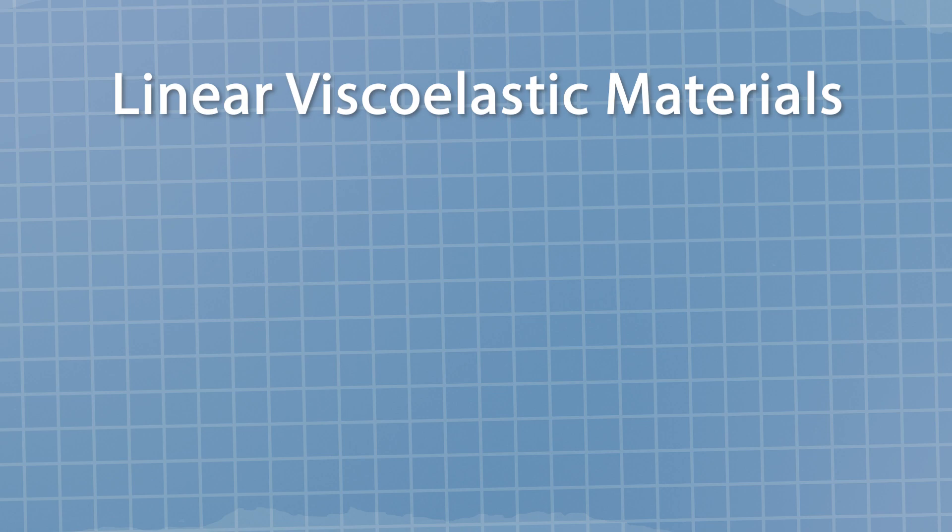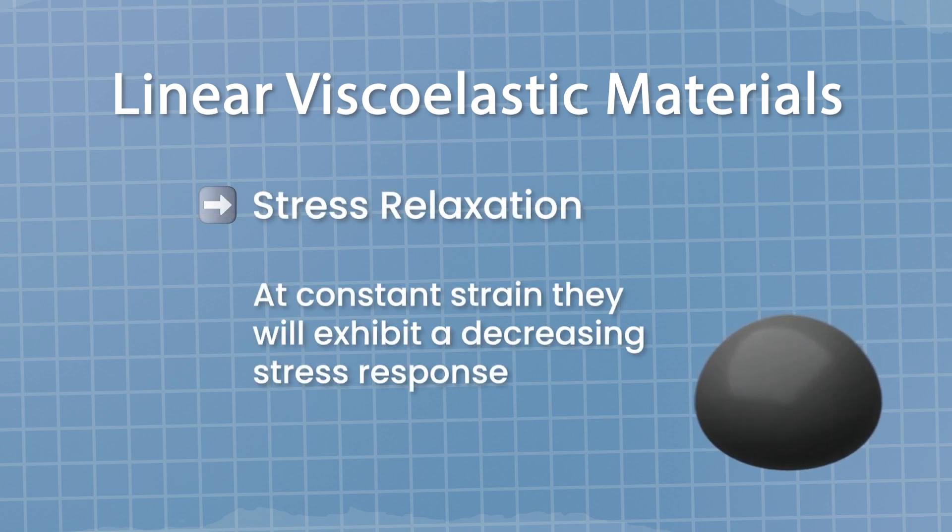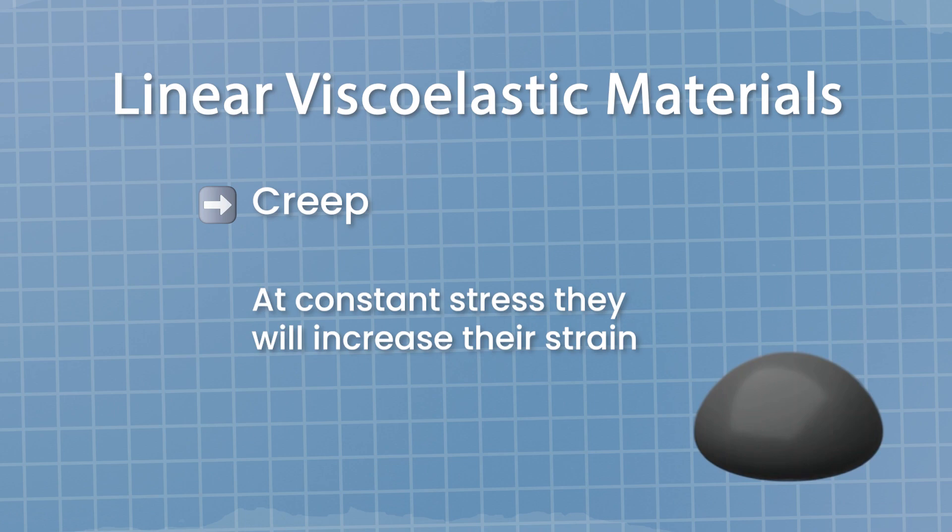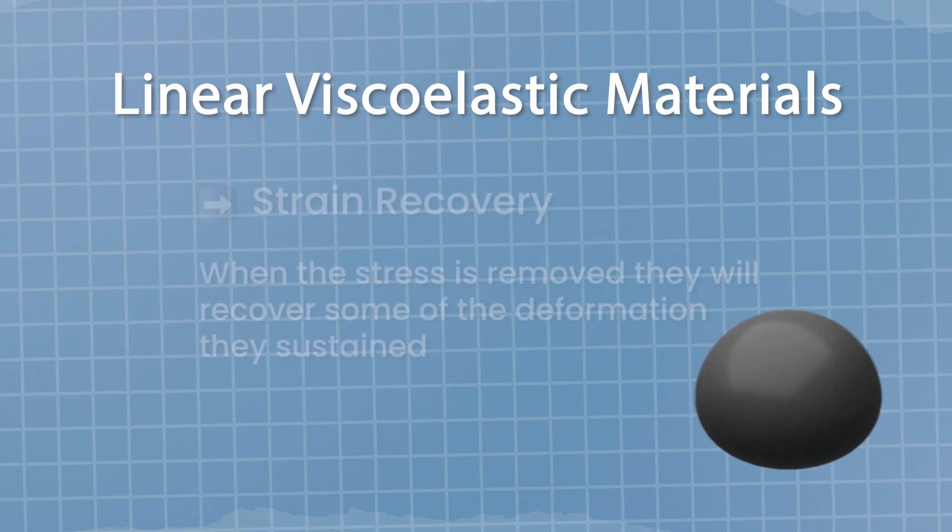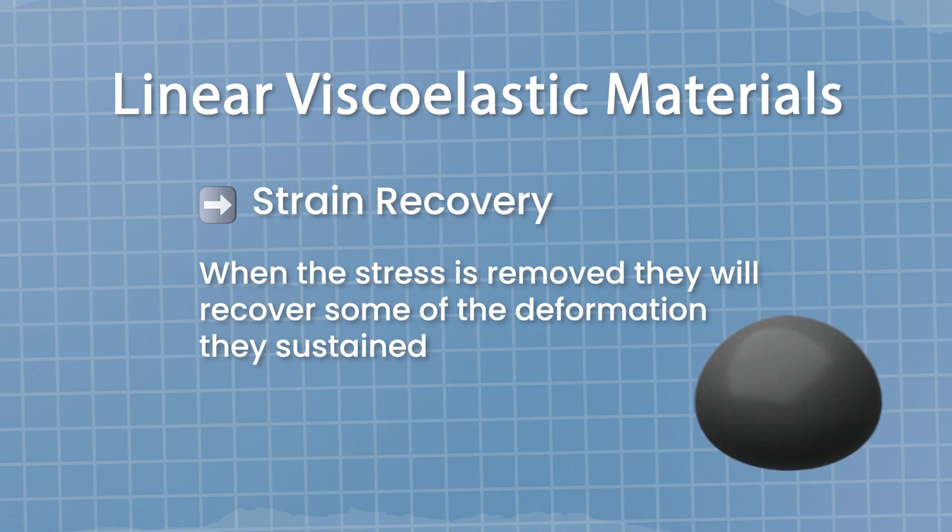Let's now look at a different example still related with mechanics. A class of materials that can show a very interesting range of behaviors are the so-called linear viscoelastic materials. They can, in general, display stress relaxation, meaning that when at a constant strain they will exhibit a decreasing stress response, creep, meaning at a constant stress they will increase their strain, and strain recovery, meaning that when the stress is removed they will recover some of the deformation they sustained.